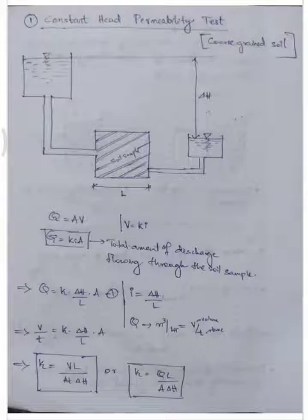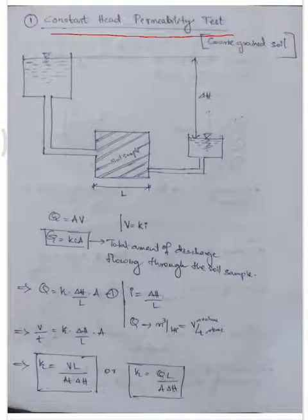The constant head permeability test is the first topic. This test is adopted for experiments with coarse-grain soil. When we want to work with coarse-grain soil, we use the constant head permeability test.